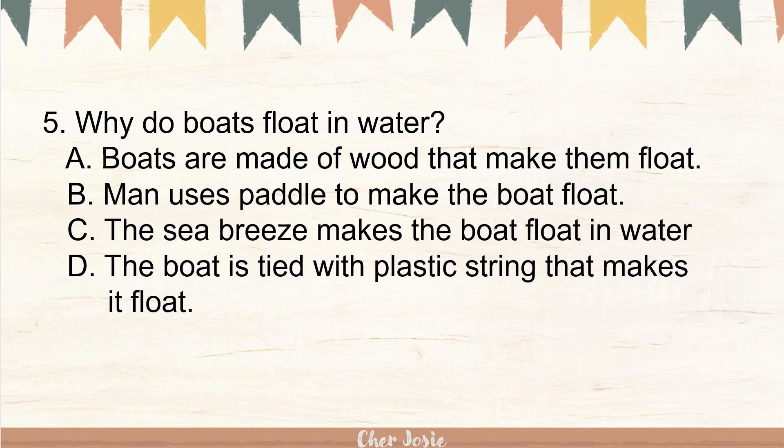Number five: why do boats float in water? A. Boats are made of wood that makes them float. B. Man uses a paddle to make the boat float. C. The sea breeze makes the boat float in water. Or letter D. The boat is tied with plastic string that makes it float. The correct answer is letter A. Boats are made of wood that makes them float.